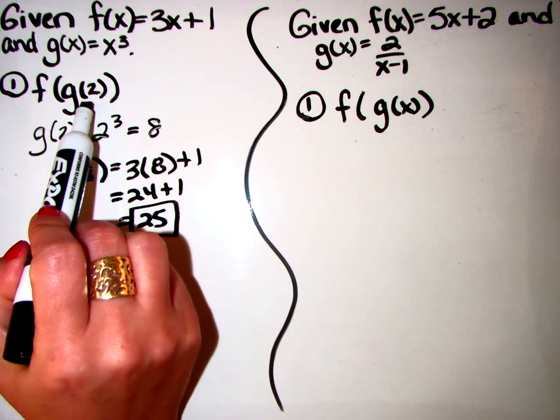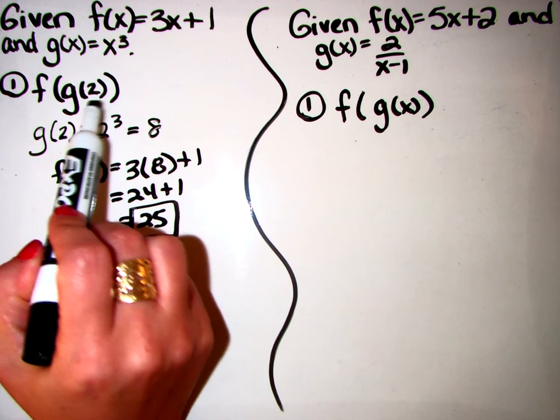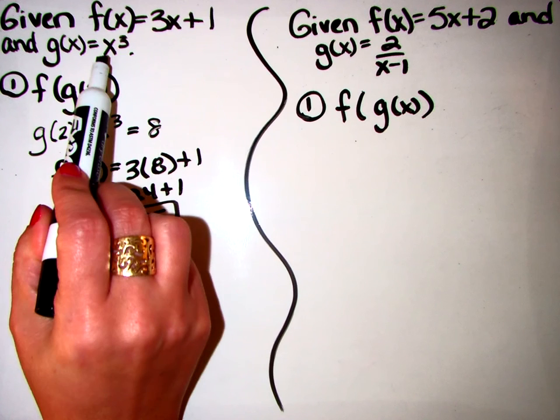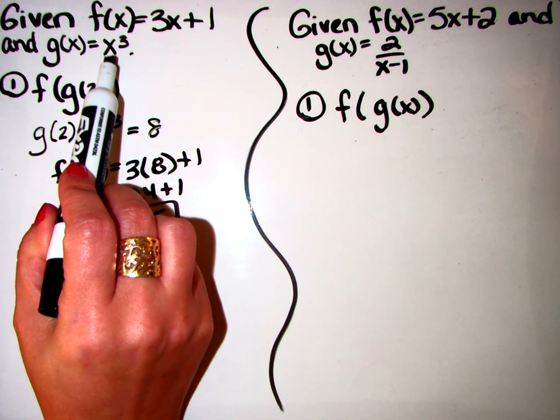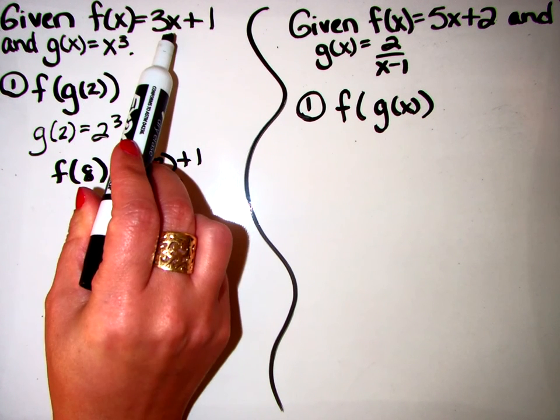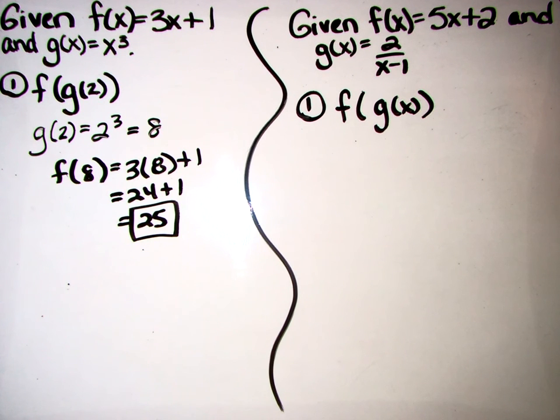So g of 2. They're going to tell you what they want you to put in here. It could be a 4, it could be a 6, it could be anything, and you're going to go plug it in and solve it to get your answer. And once you have your answer, you're going to go put the answer back into the other equation's x to find your answer.